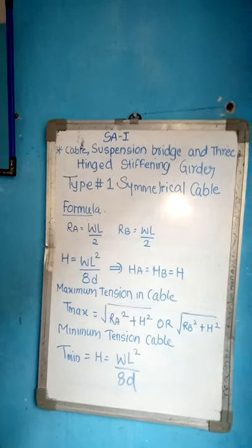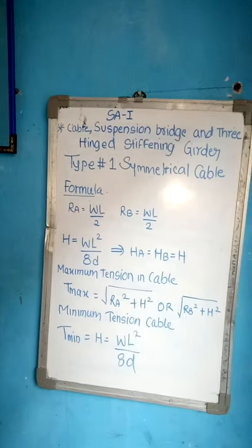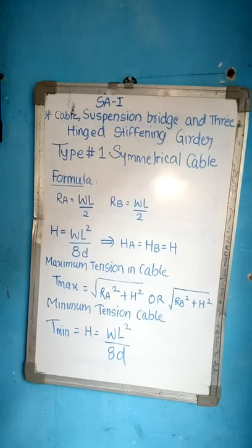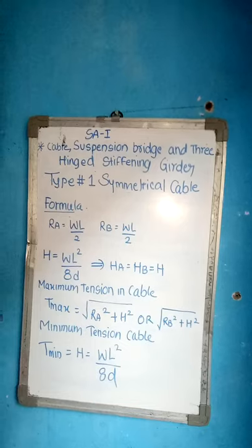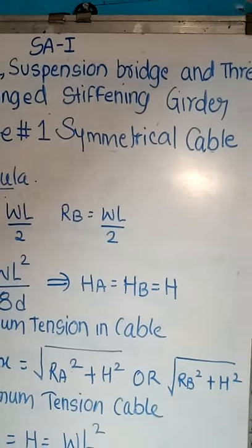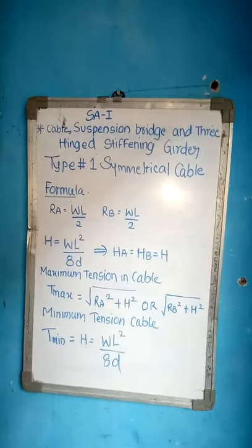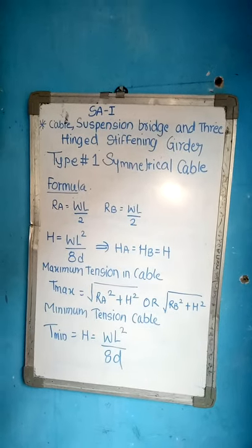RA equals WL by 2, RB equals WL by 2 - symmetrical reactions are the same. Again, horizontal forces: H equals WL square by 8d. HA is equal to HB is equal to H. Now, maximum tension in cable, how to calculate: T max is equal to...